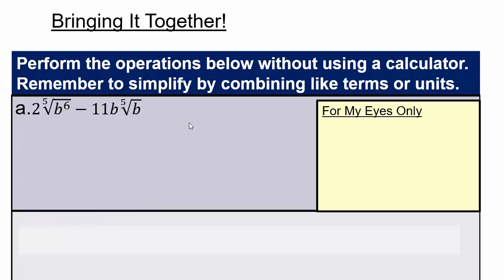Assuming you have come back from pausing the video, let's start with recalling fifth root of b to the fifth. Remember what that is? Fifth root is the same as exponent of one over five. So here we have b to the fifth over five, giving b to the one. Or just remember when you have roots, fifth root means your b's are going to come out in groups of five — five b's multiplied together will come out as one b.